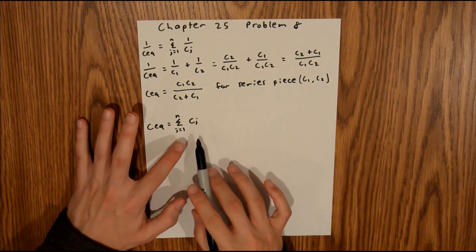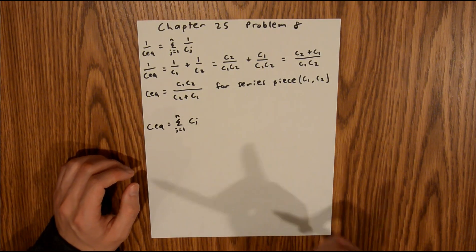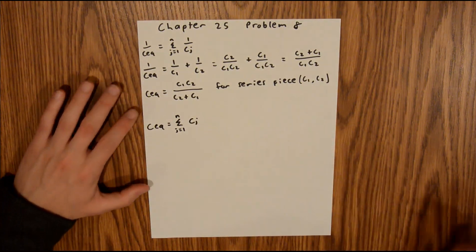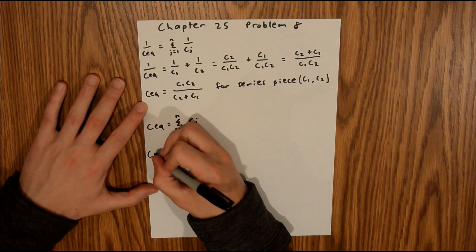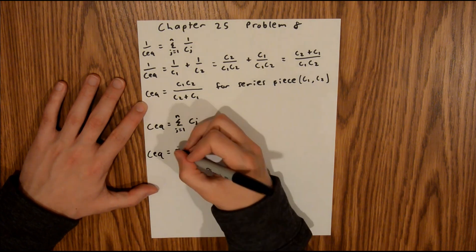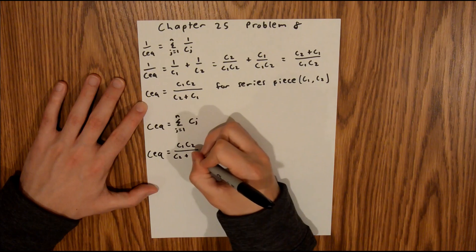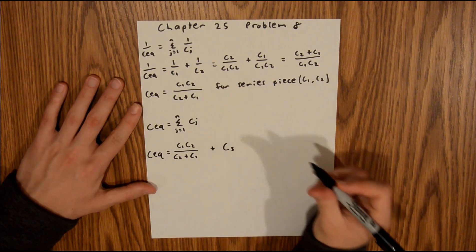This CJ for us is going to be two terms. One term is this whole system that we just made right here, and then also C3. So, CEQ is equal to C1C2 over C2 plus C1, all that plus C3.